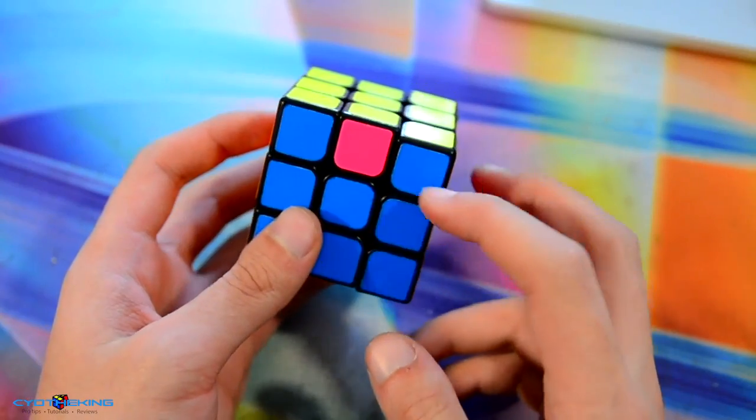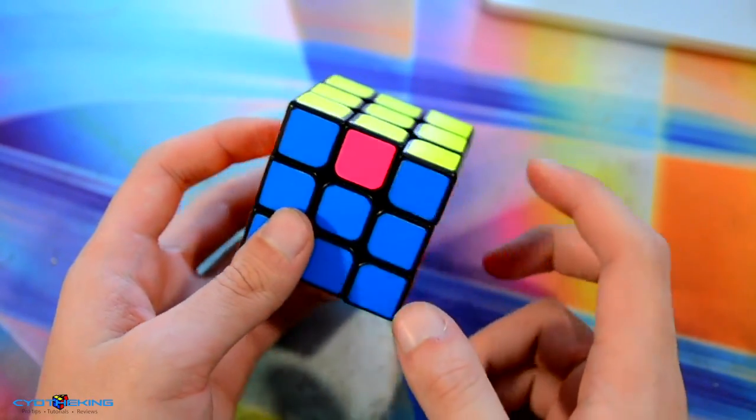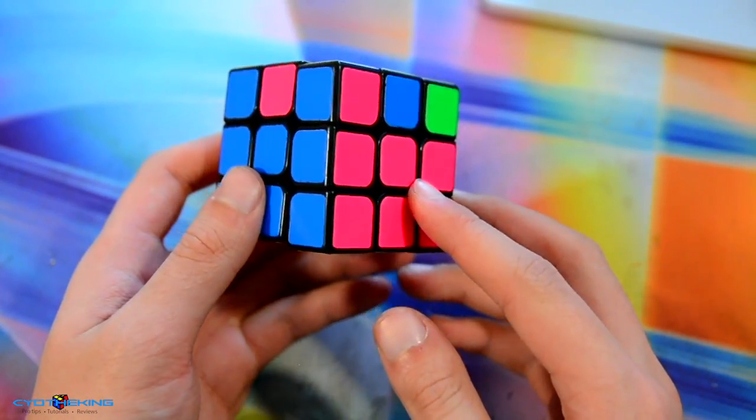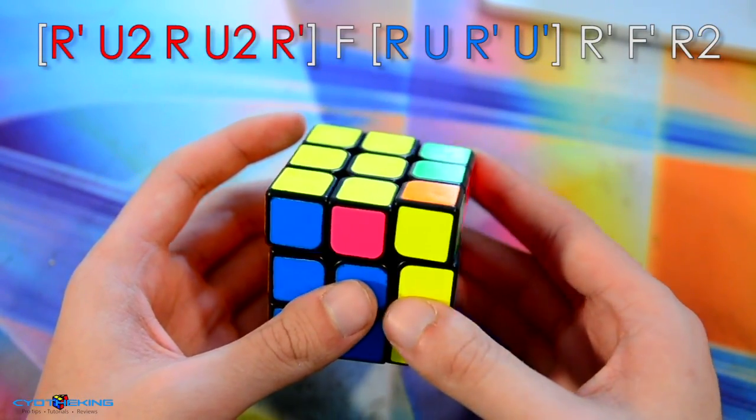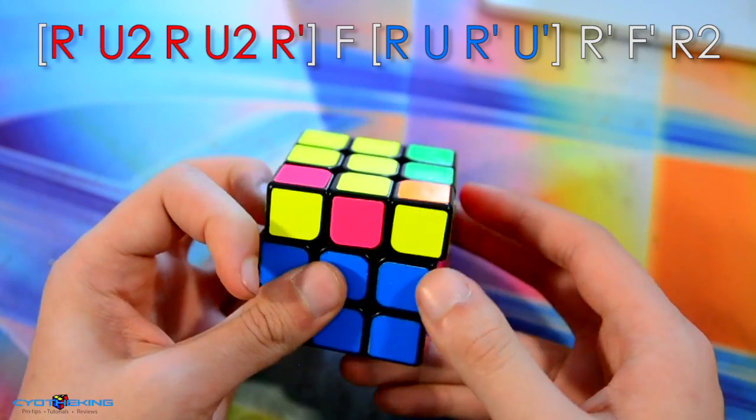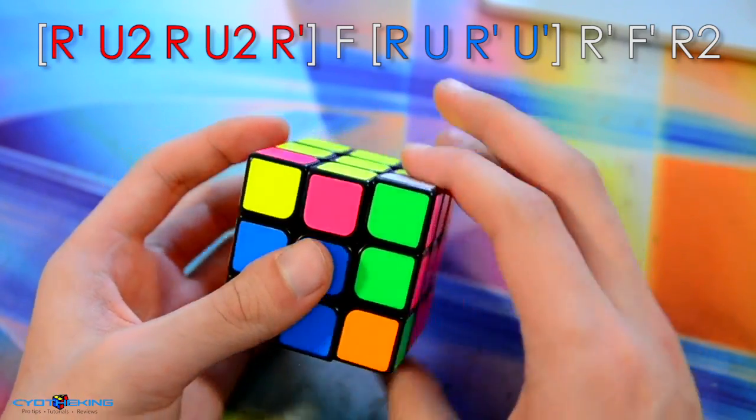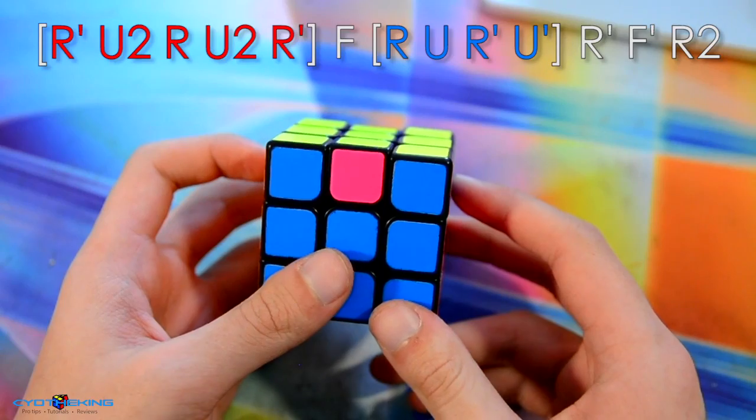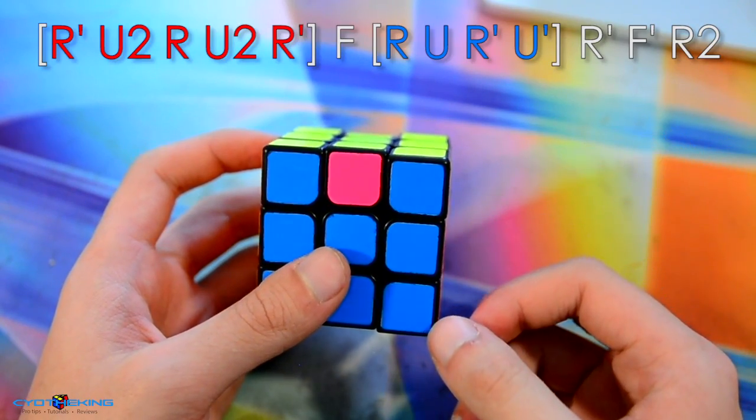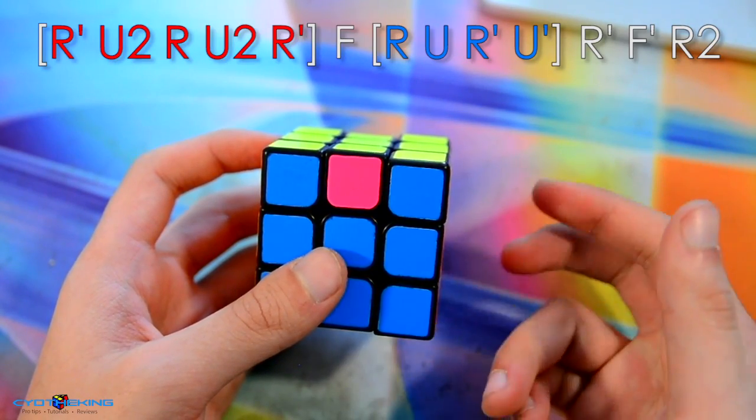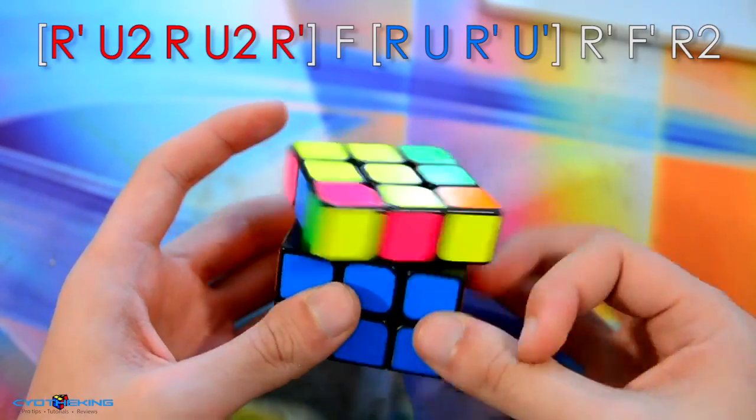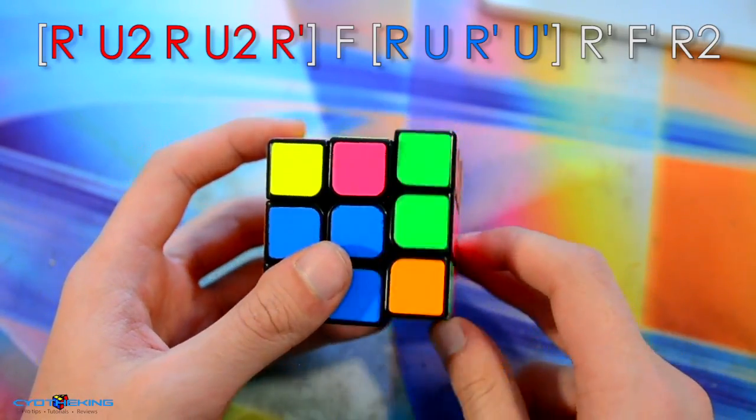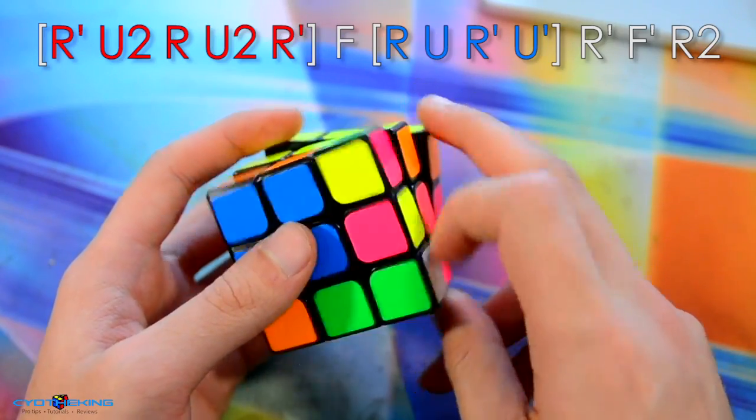The next example is look for repeating patterns inside your algorithms. This helps a lot. If you look at an R perm, it has a few repeating patterns in the beginning. The R perm starts R prime U2 R U2 and then R prime again. So the first four or five moves there are really easy to remember because it's alternating between R and U2 moves. So R prime U2, then alternates to an R U2, and then R prime, and then the next is F.